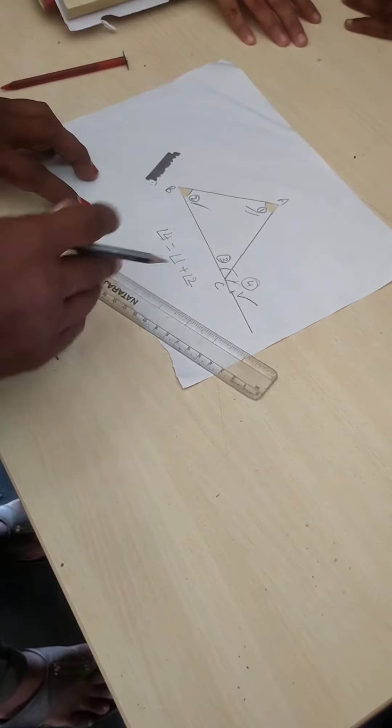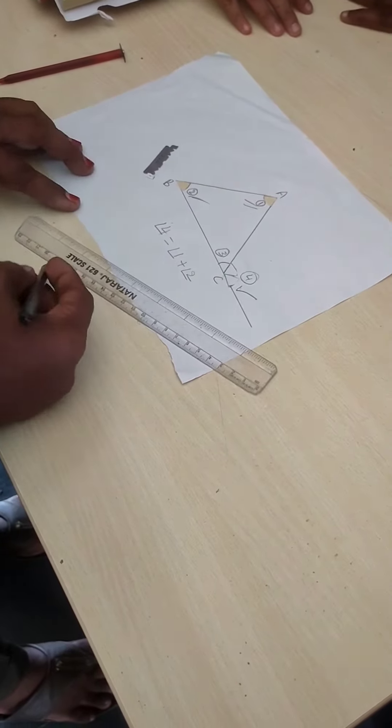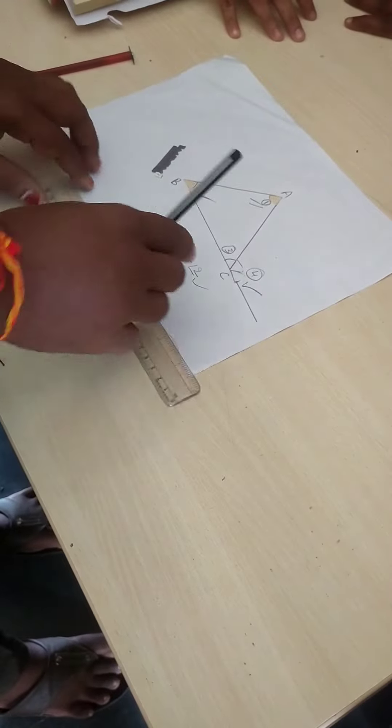Which means an exterior angle of a triangle is equal to sum of its interior opposite angles. Ok understood? Yes sir. Ok, take your seat.